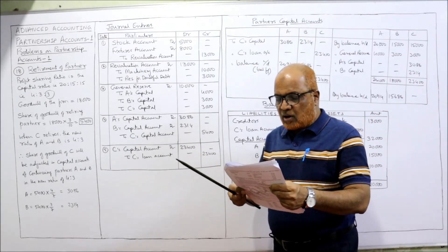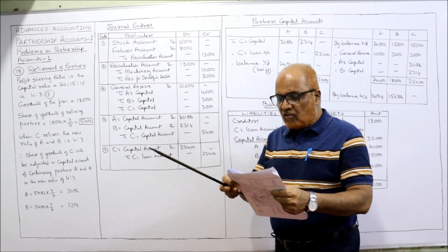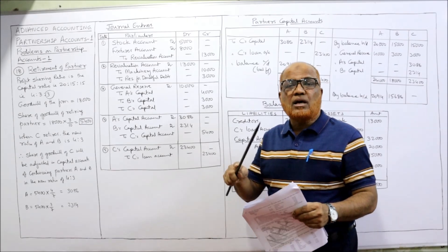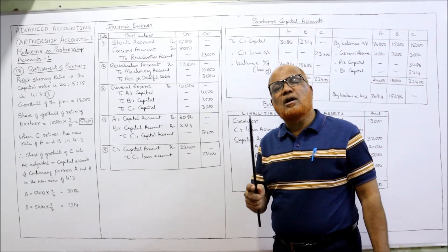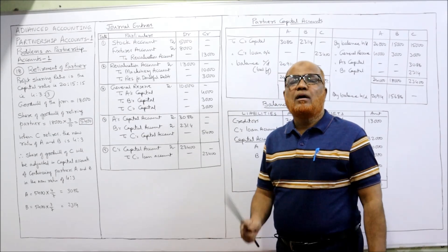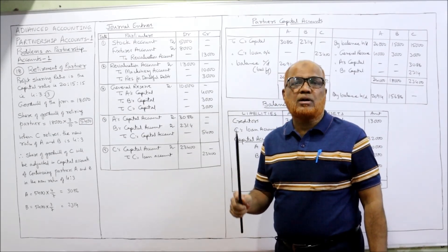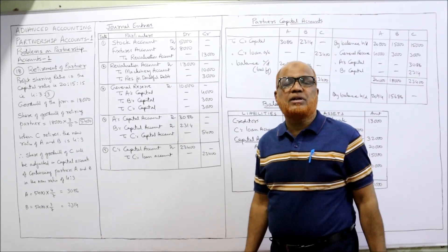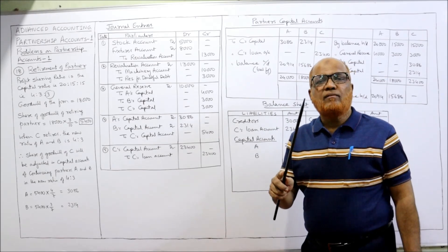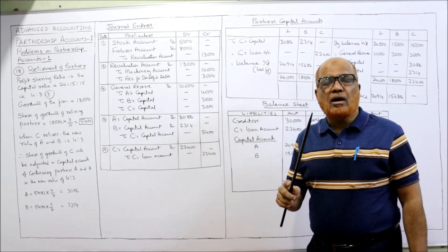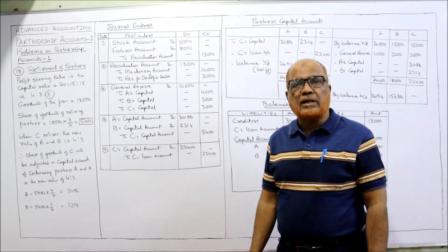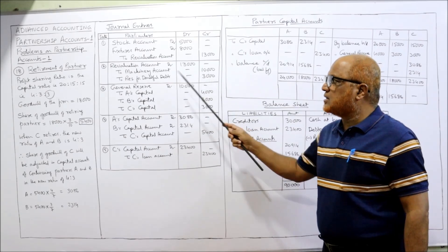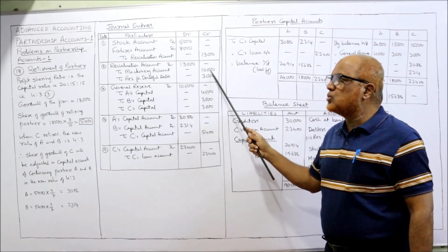Machinery has to be decreased from 25,000 to 15,000, a decrease of 10,000 — revaluation account debit, machinery account credit 10,000. Also, a reserve for doubtful debts of 3,000 has to be created — revaluation account debit, reserve for doubtful debts credit 3,000. Combined: revaluation account debit 13,000, machinery account credit 10,000, reserve for doubtful debts credit 3,000.